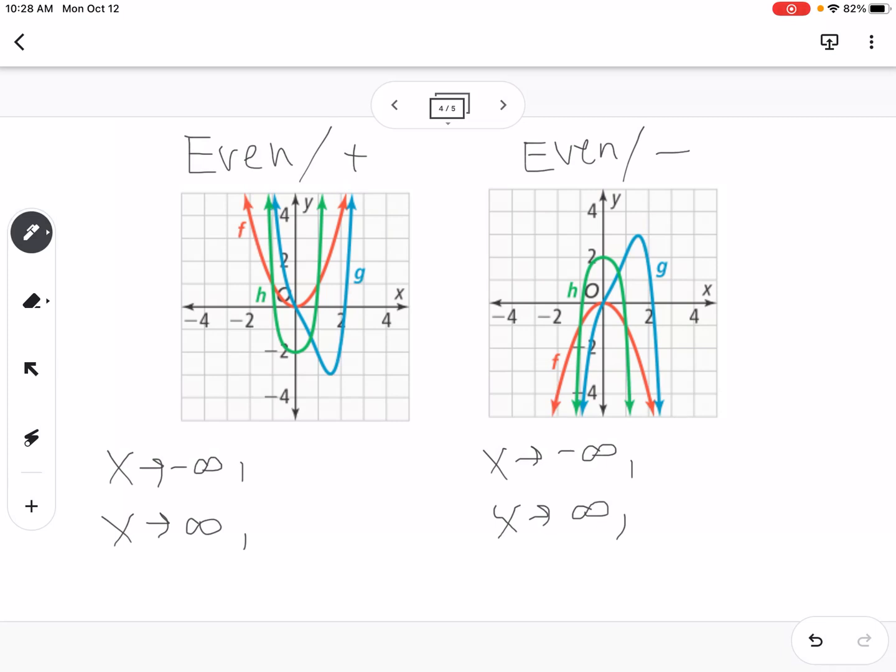So for this graph on the left here, we can see both to the left and the right, they're increasing. So we would say y is going to positive infinity, and y is going to positive infinity. And if we look over here, as we go to the left and right, y is going to negative infinity. Okay, so that is end behavior.